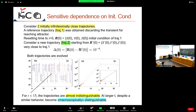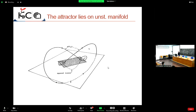This confirms that if you construct the stable and unstable manifolds of the unstable fixed points, the attractor lives there — all attractors lie on unstable manifolds, consistent with what we discussed earlier.